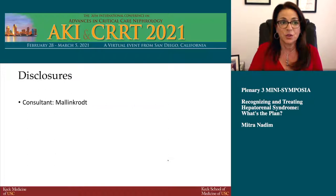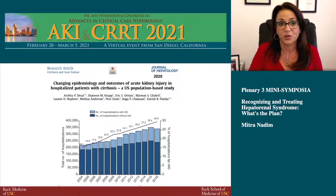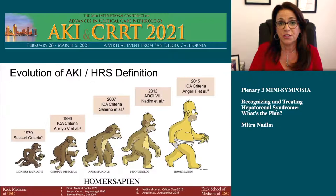Looking at the epidemiology of acute kidney injury in patients with liver disease over the past two decades, there's been an increase of hospitalizations of patients with acute kidney injury, starting at 15% back in 2004, now as high as 29%. A lot of this increase could potentially be due to the changing definition of acute kidney injury in these patients.